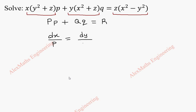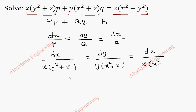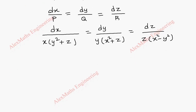To get the solution we have to solve dx/P = dy/Q = dz/R. Now I'm going to substitute the values of P, Q, and R — that is dx by x(y² + z), dy by y(x² + z), and dz by z(x² − y²).